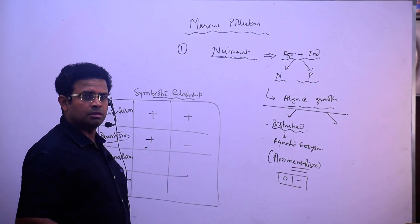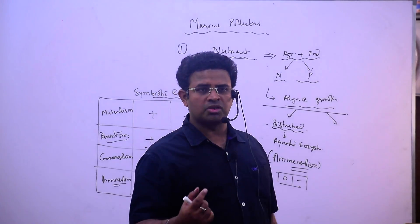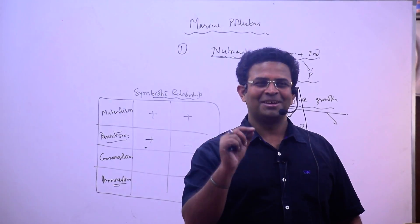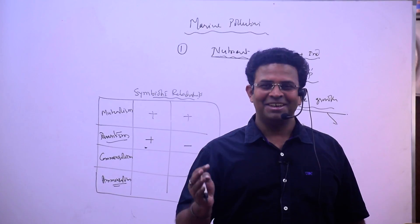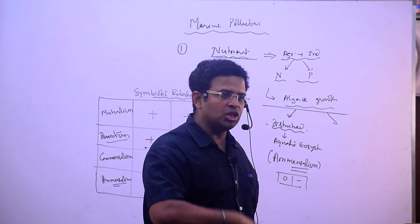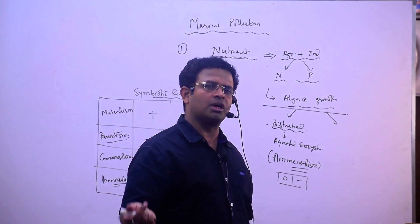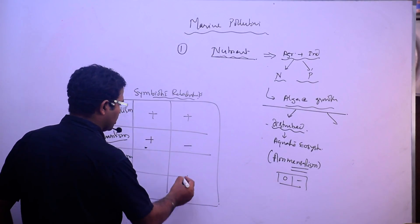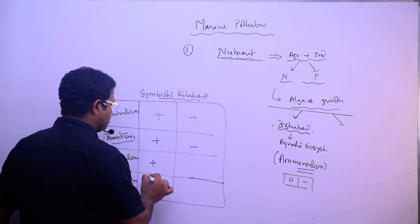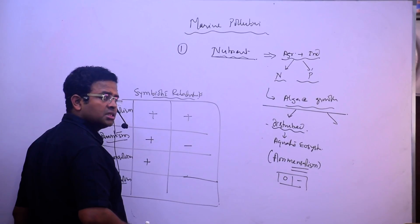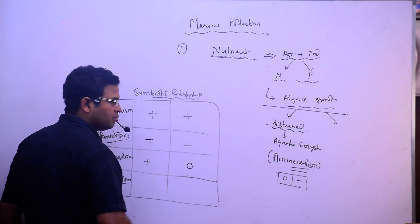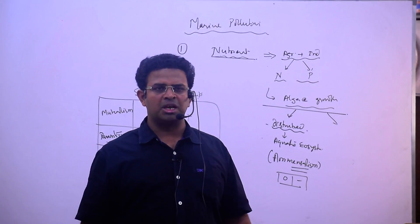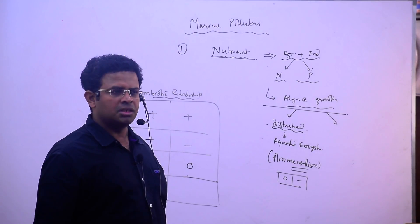In parasitism, in our stomach there are some tapeworms and all. The nutrients we should get, they are growing. So one is benefiting, another is harmed. In commensalism, one is benefiting, other is unharmed.